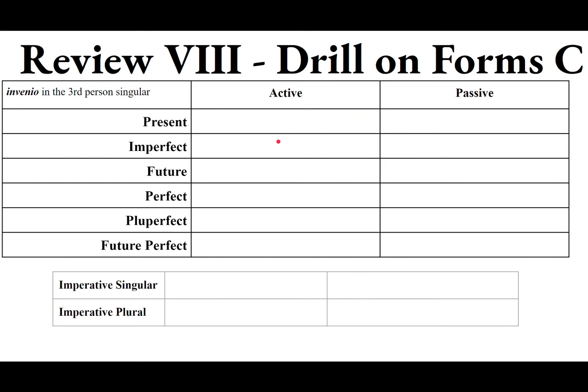Don't use BOBIBITUR for the future — third IO and fourth conjugations use AM, ES, ET. So the future active is INVENIET: he/she/it will find. The passive uses ETUR: INVENIETUR — he/she/it will be found.